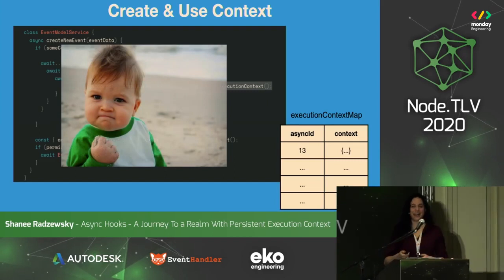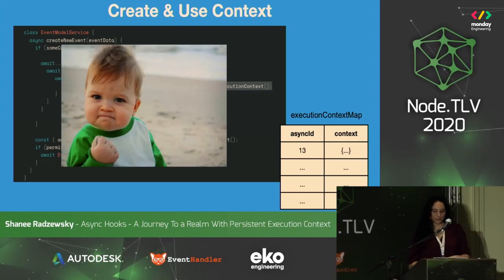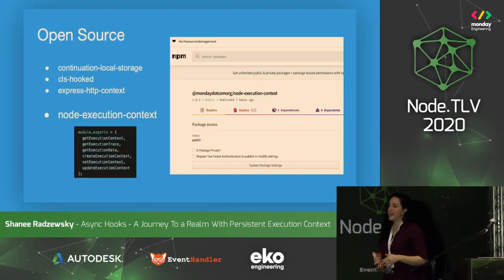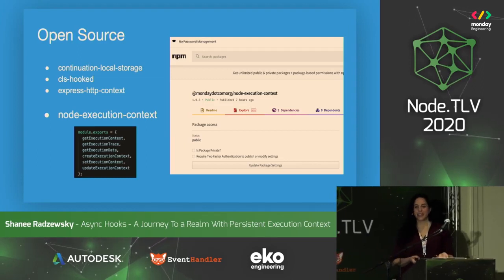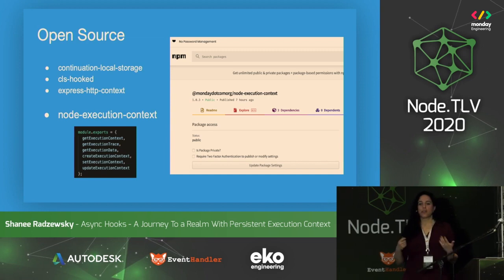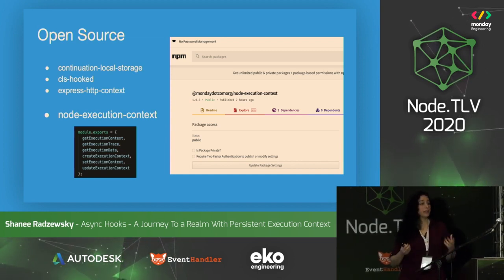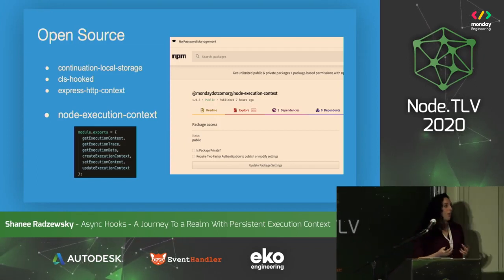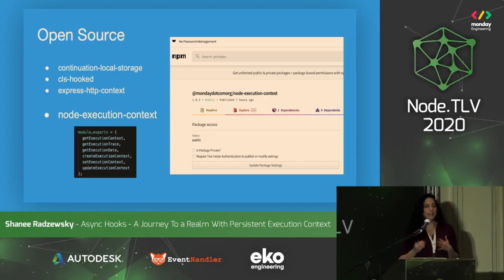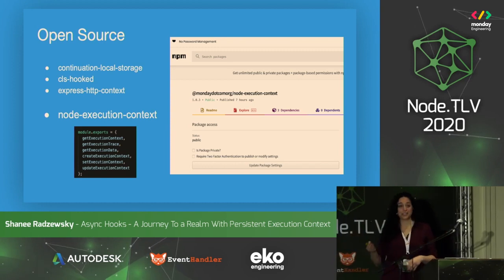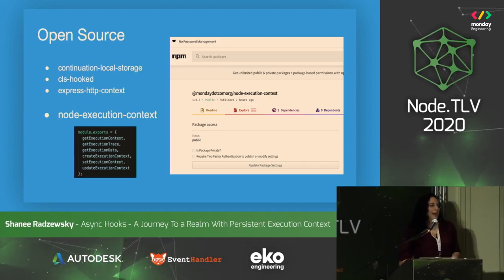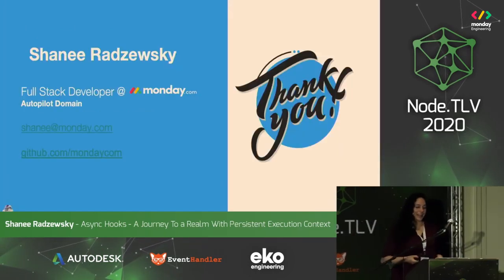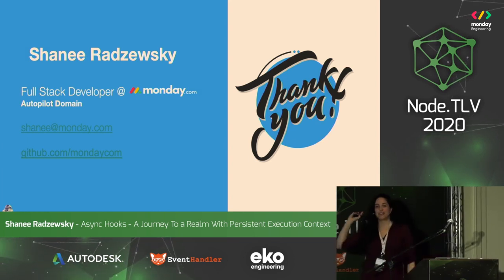This is definitely a lot better than global variables. All the code snippets you saw today are from a shiny new open source library, so you can go and use it — it has a bit more error handling and validations, but it's very lean and what you saw today is the core of what's implemented. Other open-source libraries can also create this tenacious context for you. I'm a full-stack developer at monday.com, so you can find me at the Monday stand if anyone has questions — thank you so much.